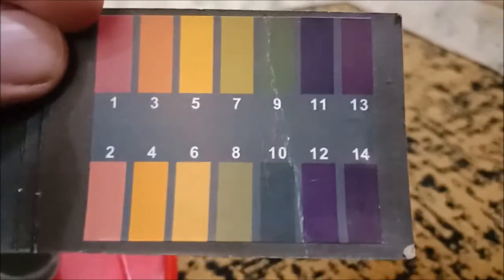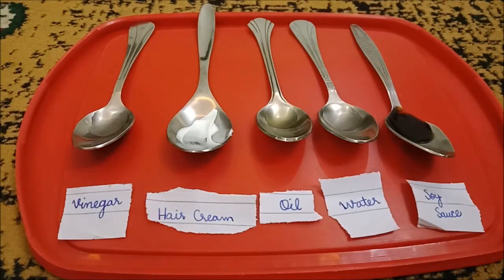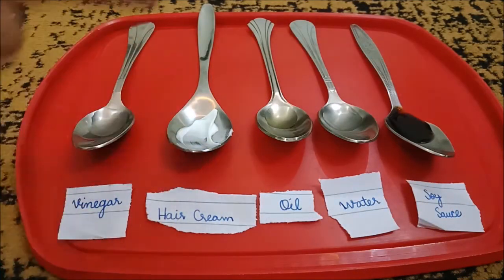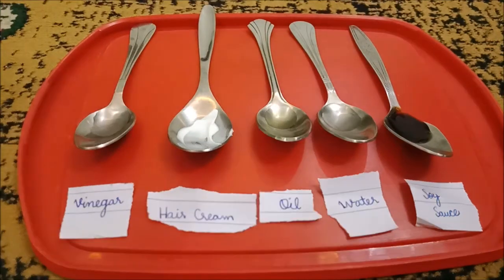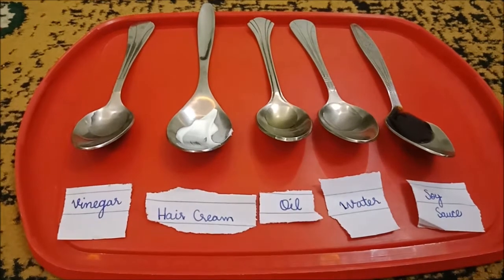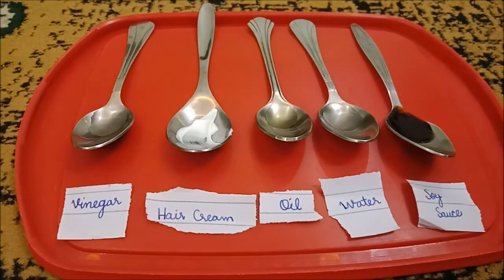So let's get started. I have the basic stuff: vinegar, hair cream, oil, water, and soy sauce. We're going to see everything with the pH paper. You might know that vinegar is an acid, so maybe this will turn into red or orange. So I'll put the pH paper right in.